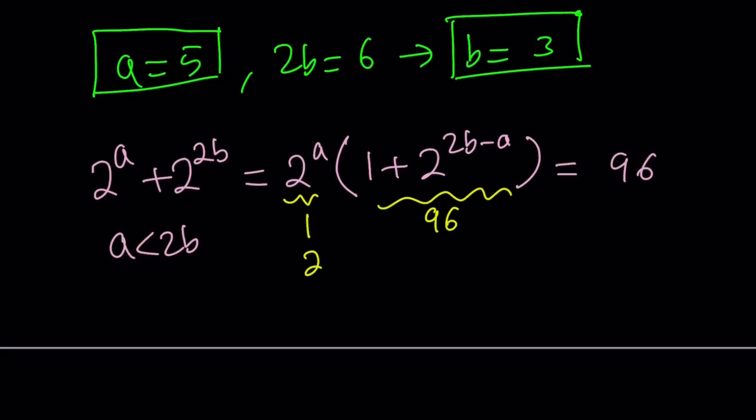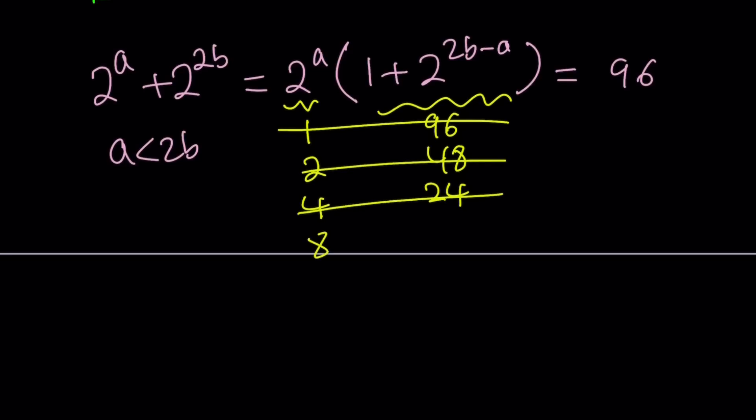What about using 2 and 48? 48 is not 1 more than a power of 2. That's not going to work. And then I'm going to continue with 4. If 2 to the power of a is 4, then this is going to be 24, which is not 1 more than a power of 2. So none of these is going to work. And when this is 8, this is going to be a 12. Again, that's not 1 more than a power of 2.